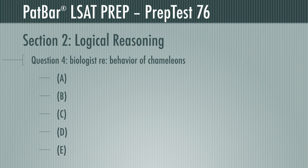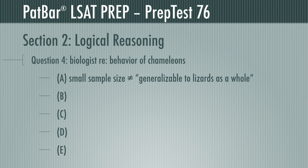Question 4 presents a biologist citing a study of the behavior of certain chameleons, touts the credentials of the study's author, and uses those credentials to suggest the report's critics are wrong. You are tasked with finding the flaw in the biologist's reasoning. The biologist doesn't say that critics find the report too general with respect to lizards as a whole — rather, specifically lizards such as chameleons. A is incorrect.